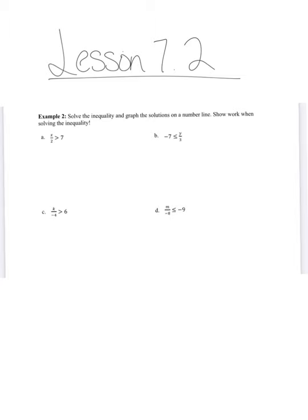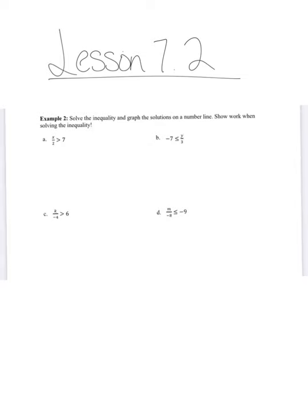So for inequality in question A, we are going to use multiplication to solve. We've got x divided by 2 is greater than 7. So to get x by itself, we're going to multiply by 2 on both sides. My inequality stays the same, and 7 times 2 is 14, so x is greater than 14.